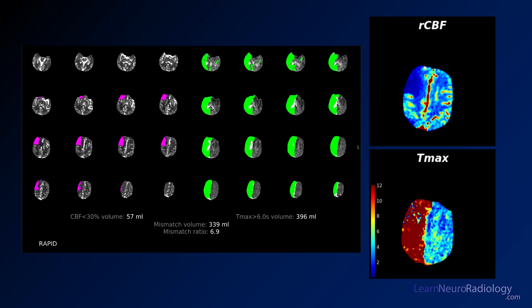Here you see these blown-up images showing the same thing — loss of blood flow in this right frontal area, but the T-max is very elevated throughout the entire cerebral hemisphere.